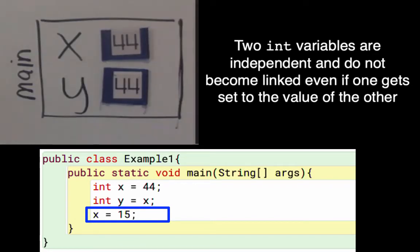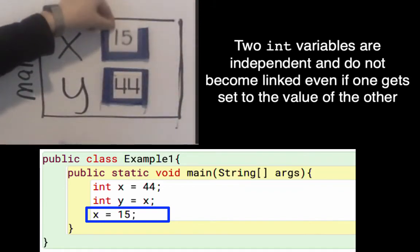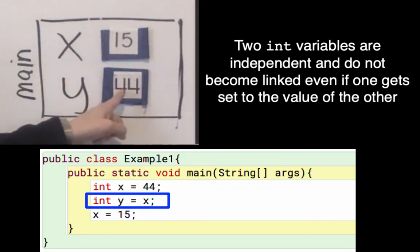My next line says x gets 15. So x's value is gonna change. It's no longer gonna be 44 and now it's gonna be 15. A few things to notice that the variable y gets a copy of what was in x.